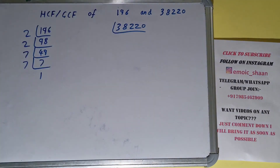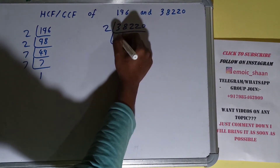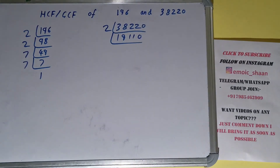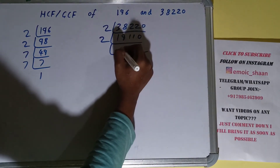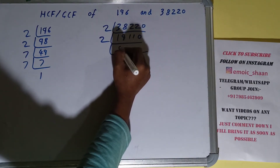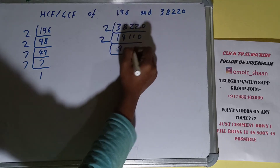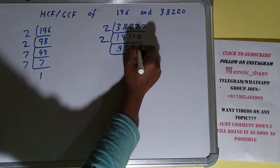Now we need to do the same with the number 38220. Is 38220 divisible by 2? Yes, and we get 19110. Is 19110 divisible by 2? Yes, and we get 9555.